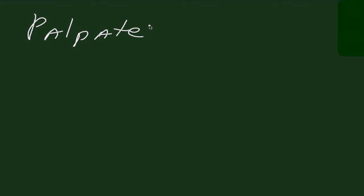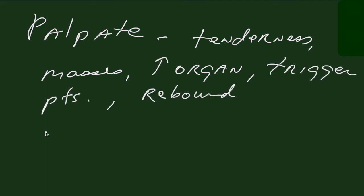Then palpate the abdomen gently. I always find it useful to ask the patient to show me where the worst area of pain is located, and then start my exam away from this area into areas with less pain and tenderness for the patient. So you want to palpate for tenderness, masses, organomegaly, trigger points, and rebound tenderness. Examine the flanks and inguinal areas in a similar manner.